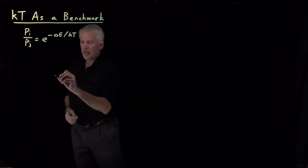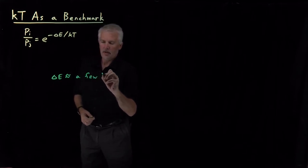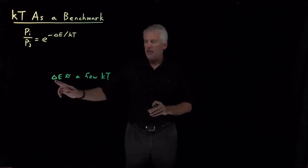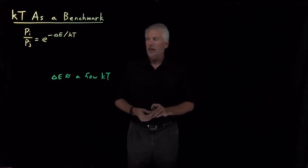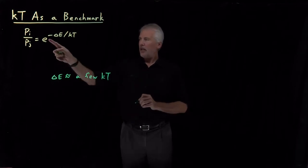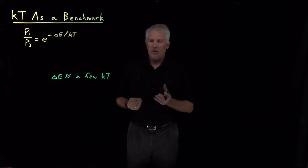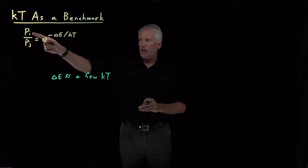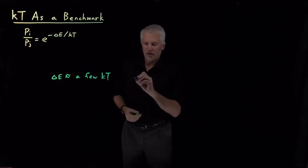For example, suppose that ratio ΔE over kT is one, two, or three — some relatively small number. That means the difference in energy is a few times the value of kT, so we say that's equal to a few kT. Then e to the minus one, minus two, or minus three are small numbers — less than one, but not ridiculously small. They might be 30%, 10%, 5%. That means the population in the upper state, p sub i, relative to the population in the lower state is small but not vanishingly small.